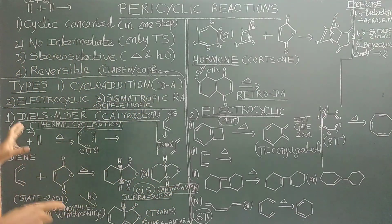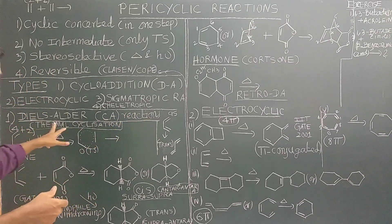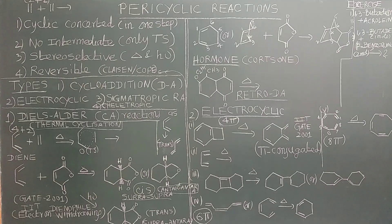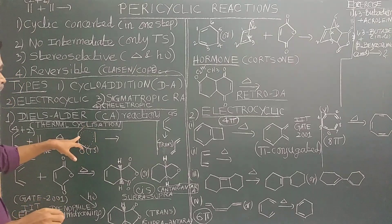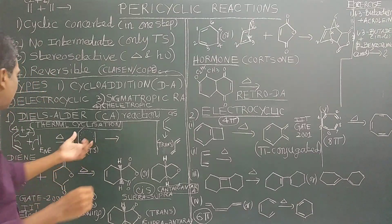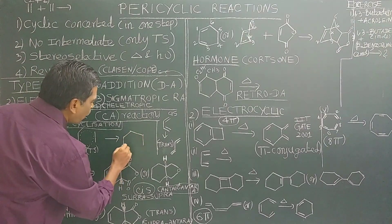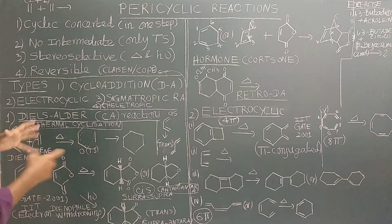Cycloaddition reaction: the Diels-Alder reaction is a well-known example of a cycloaddition reaction — it is also called thermal cyclization. In the Diels-Alder reaction, a diene (1,3-butadiene, which has four pi-electrons) reacts with a dienophile (which has two pi-electrons) in the presence of heat. It undergoes cyclization through a cyclic transition state to give the product. This involves reorganization of sigma and pi bonds — pericyclic reactions involve reorganization of sigma bonds and pi bonds.